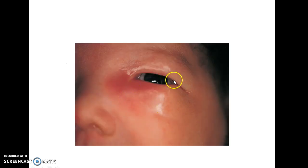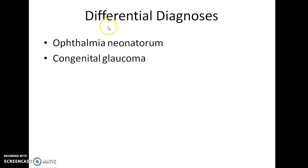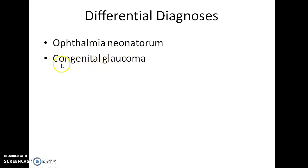This is how a patient with congenital dacryocystitis presents to you. What are the differential diagnoses? Watering of the eyes can also occur in other conditions like ophthalmia neonatorum and congenital glaucoma, and it is necessary to distinguish congenital dacryocystitis from these conditions.